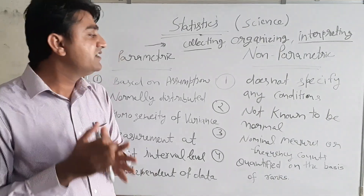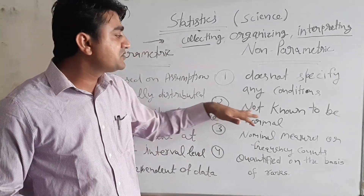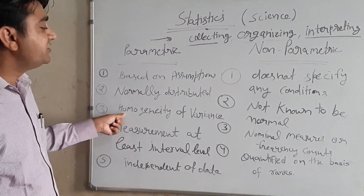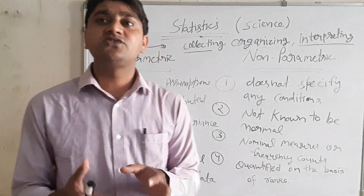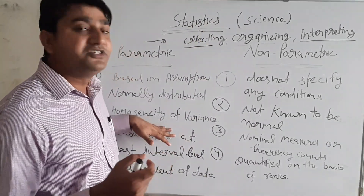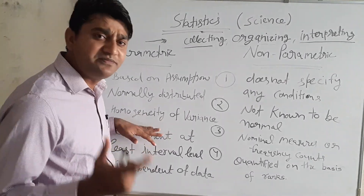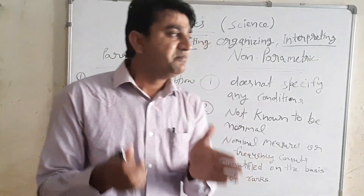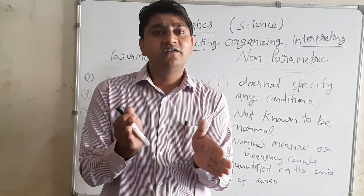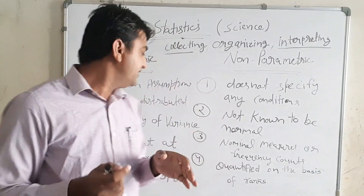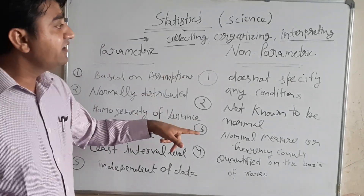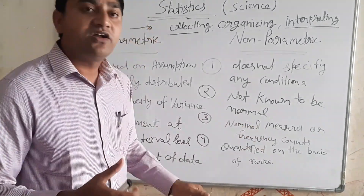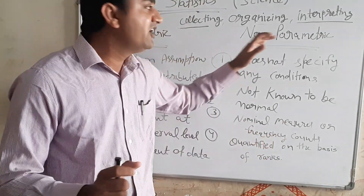Whereas in non-parametric statistics, the samples or the population are not known to be normal. Another difference is the homogeneity of variance. In non-parametric statistics, the measurement should be at least at the nominal level, or we are counting frequency.